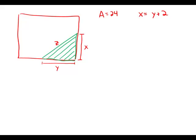The shaded portion of the rectangular lot shown here in green represents a flower bed. If the area of this triangular flower bed is 24 square yards and x equals y plus 2, what is z? z of course is that diagonal.